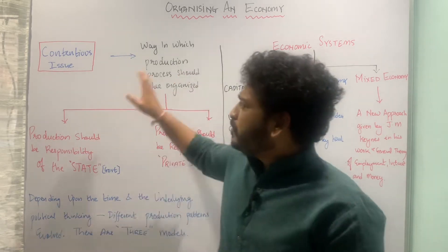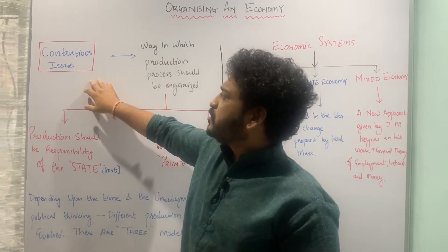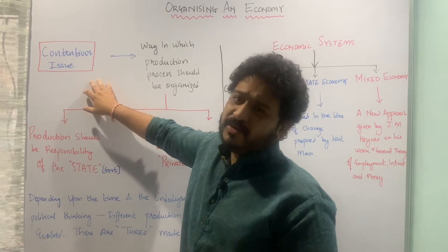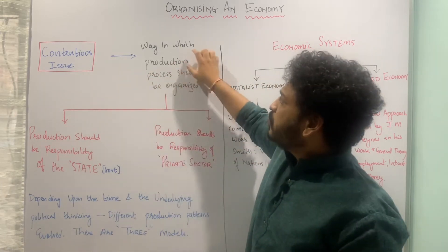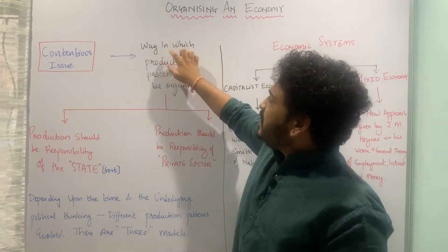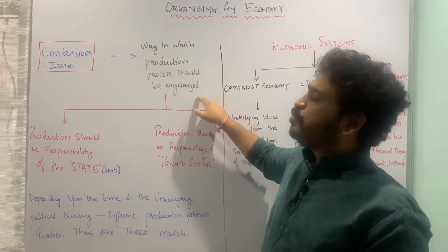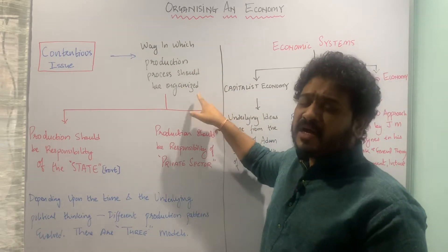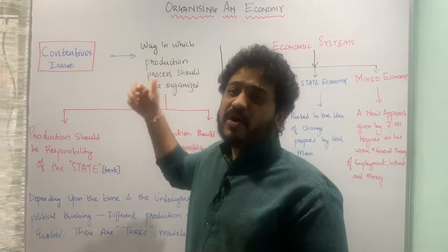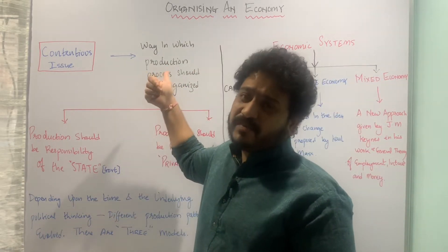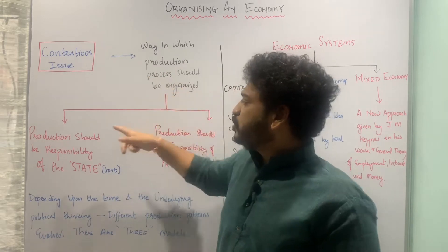There was a contentious issue troubling humanity: the ways in which the production process should be organized. There are two possible ways in which you can organize the process of production, and these were twofold.